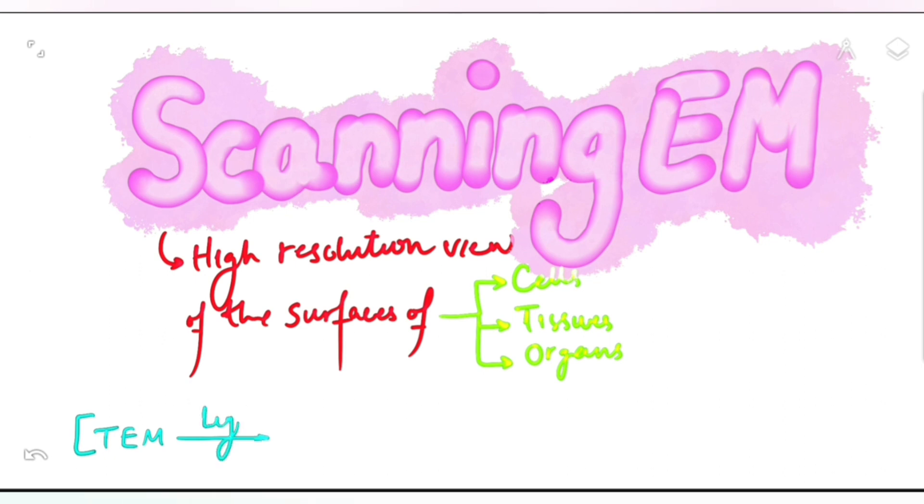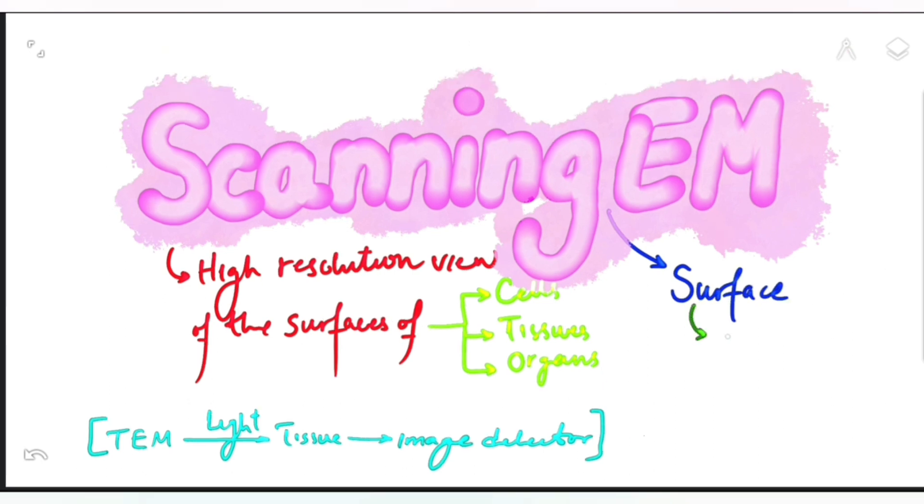With transmission electron microscopy, the light transfers, transmits, and passes through the tissue and then after it has passed it is taken by the image detector. But with scanning electron microscopy, the light hits the surface which is dried and which is sprayed with heavy metal coats, usually with gold sprays.